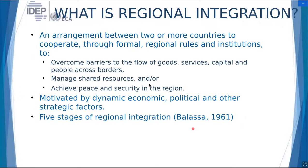Let us start with a definition of regional integration. What is a regional integration arrangement? What is a regional trade agreement, or an RTA? Basically, it's an arrangement between two or more countries to cooperate through formal regional rules and institutions. The objectives can be several — for example, to overcome barriers to the flow of goods, services, capital, and movement of people across borders. Another objective could be to manage shared resources, or to achieve peace and security in the region.